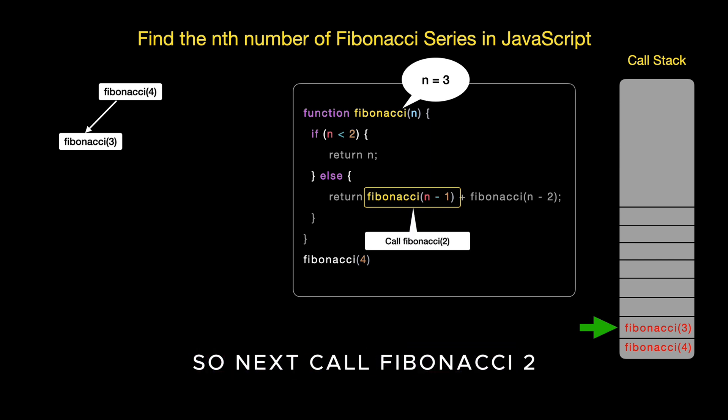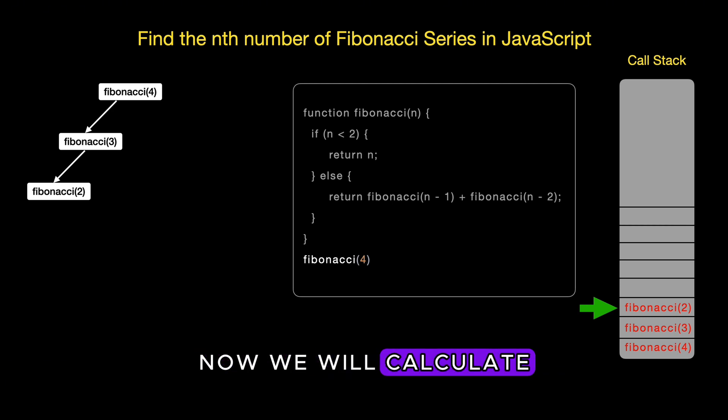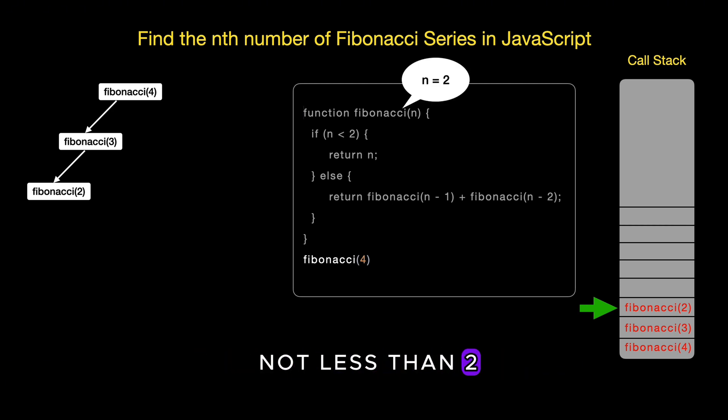So next, call Fibonacci 2 and gets added to the call stack above Fibonacci 3. You can see Fibonacci 2 gets added in the tree view. Now we will calculate Fibonacci 2. Since Fibonacci 2 is not less than 2, it doesn't meet our base case criteria so our function will proceed to the else part of the conditional. Here, the function will need to calculate the sum of Fibonacci 1 and Fibonacci 0.